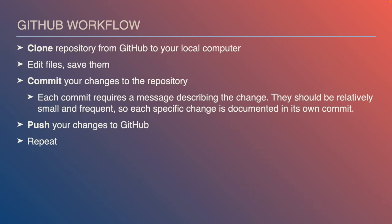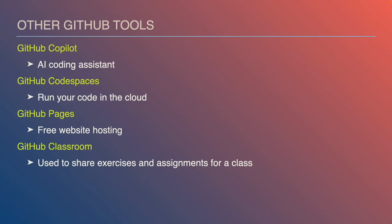Fortunately, there are ways to commit individual files separately, which might help sorting out what you did. In addition to posting and editing code, GitHub offers a number of other tools: GitHub Copilot the AI coding assistant, GitHub Codespaces that allow you to run code in the cloud, GitHub Pages for free website hosting — a lot of the course materials are hosted via GitHub Pages — and GitHub Classroom, which is how exercises and assignments are shared and collected for grading.